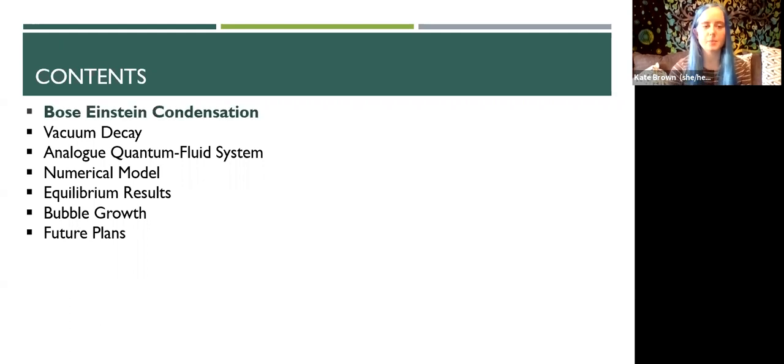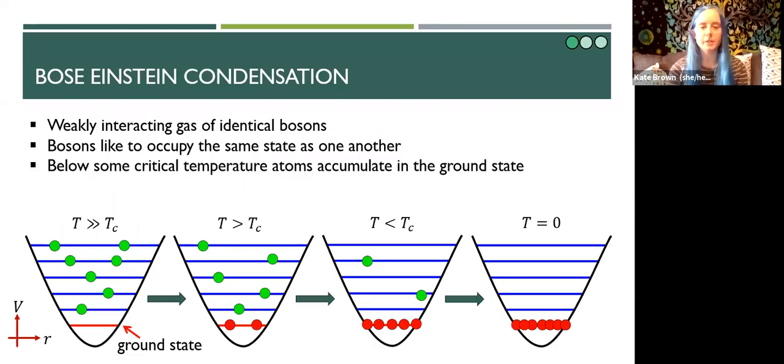So as promised, quantum fluids. When we talk about quantum fluids we're usually referring to some relation of the Bose-Einstein condensate. Consider a system of weakly interacting identical bosons confined to some sort of trapping potential, for example a harmonic potential. The first thing to note is that bosons are sociable particles. They're more than happy to occupy the same state as one another.